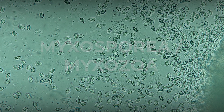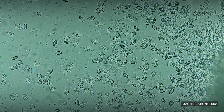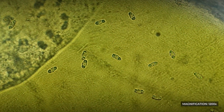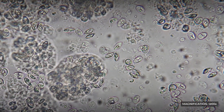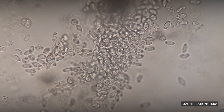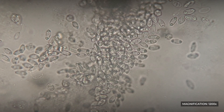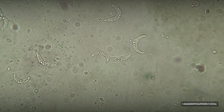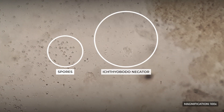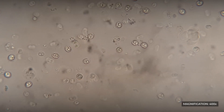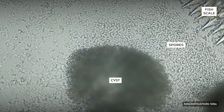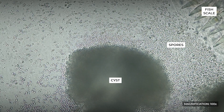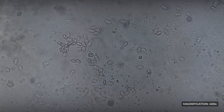Myxosporea or Myxozoa is a large group of spore-forming organisms, all of which are parasites, mainly of freshwater and marine fish species. The class Myxosporea encompasses several thousand species, and scientists are constantly discovering new genera and species of these parasites. For example, there are already more than 2000 species described in the genus Myxobolus. Myxosporea have a complex life cycle, in which after several developmental stages, spores are formed in the final stage.